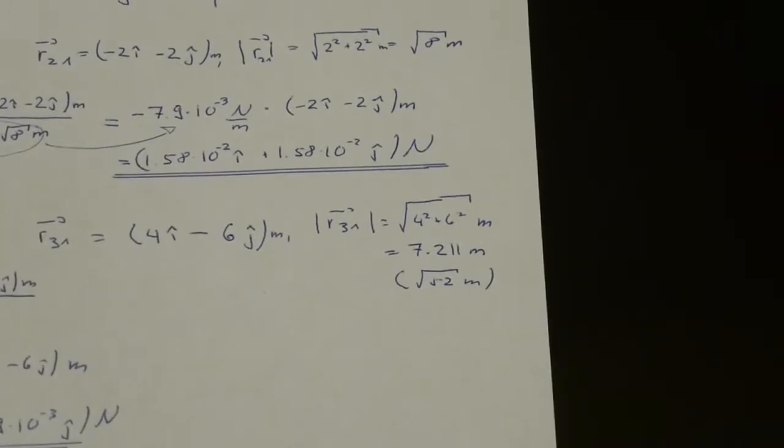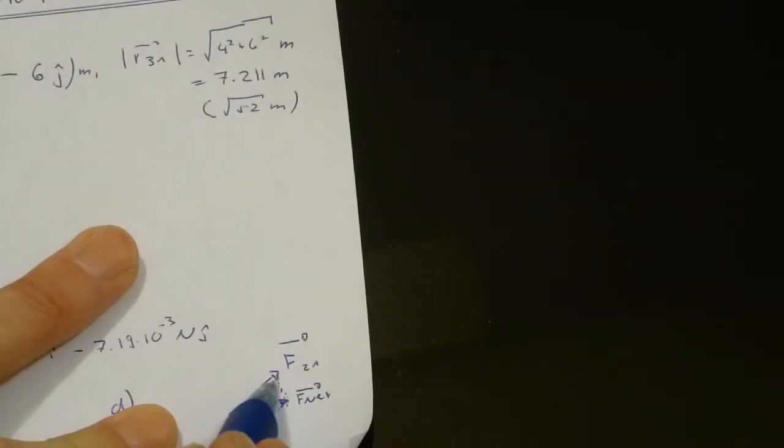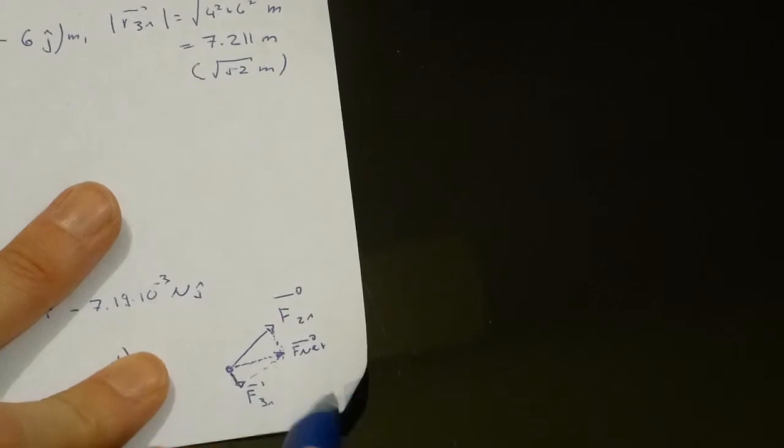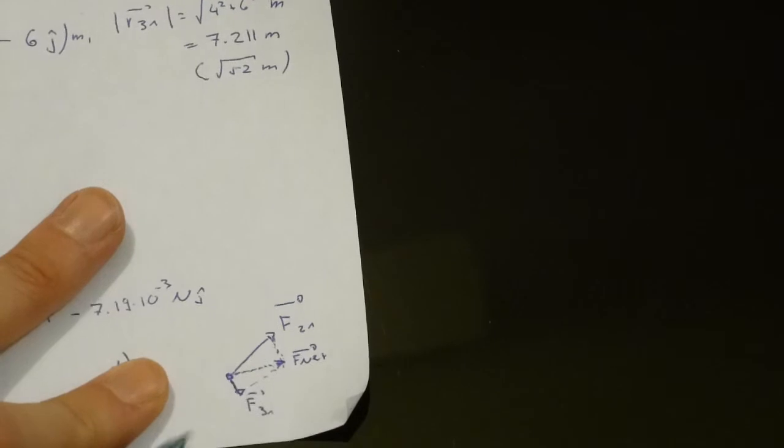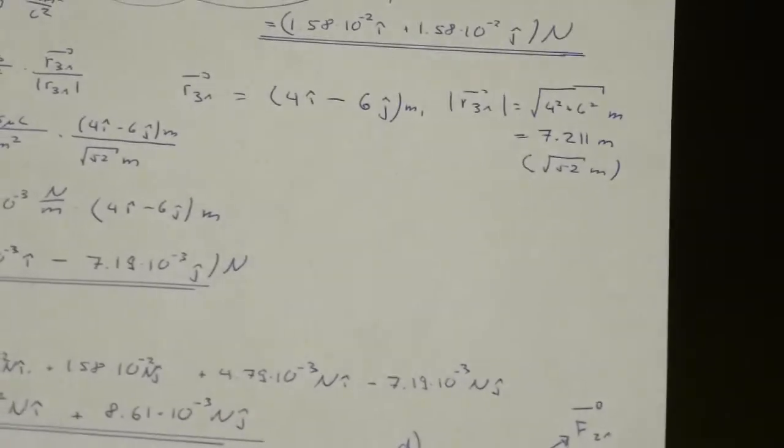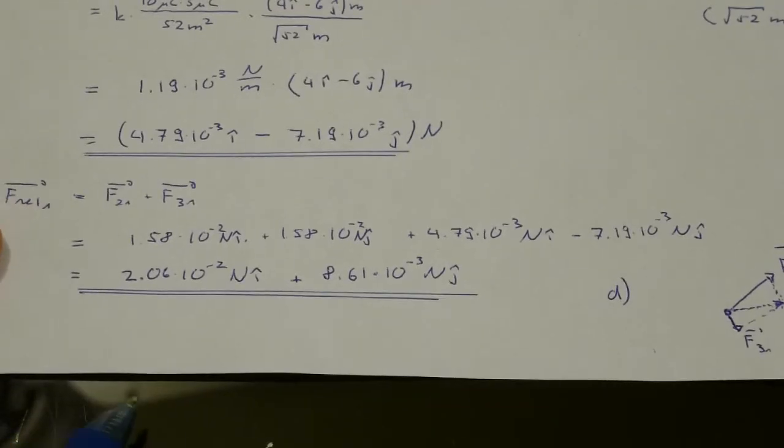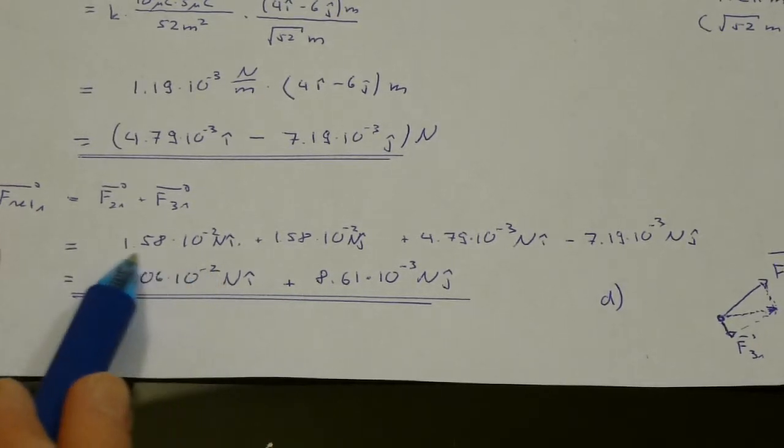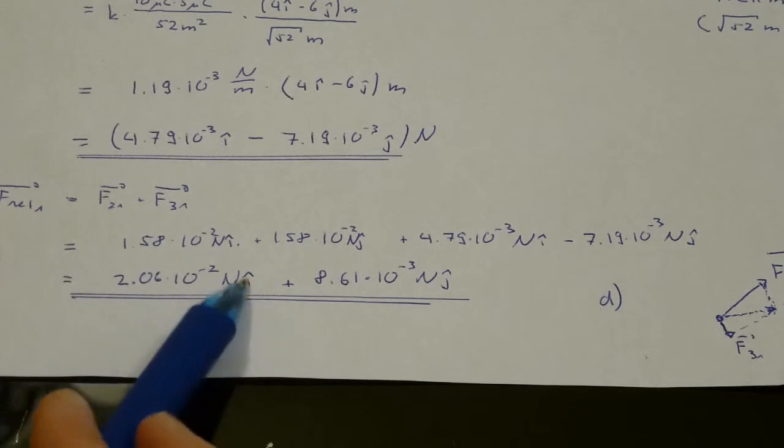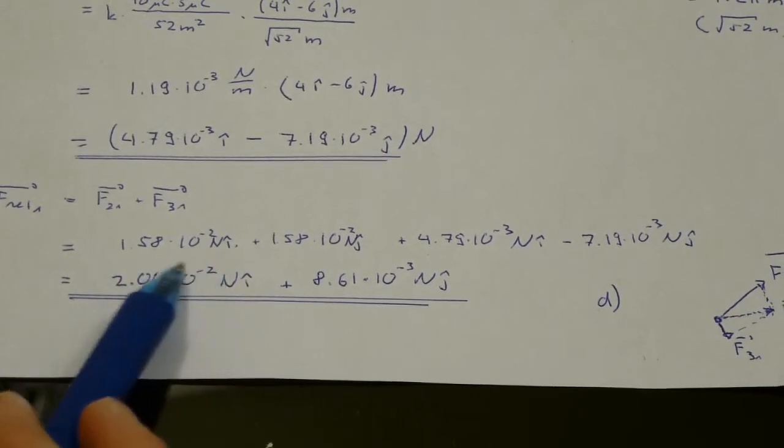And if you look at the magnitudes, the magnitude of force of 3 on 1 is much smaller. Therefore, if we kind of sketch a head to tail method here, we can find the net force that should be just a bit above the x-axis, which if you look at the number that we calculated, kind of makes sense. The major part goes in the direction of the x-axis, then just a tiny bit upwards.